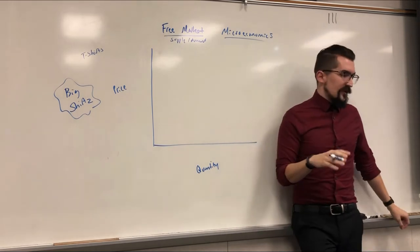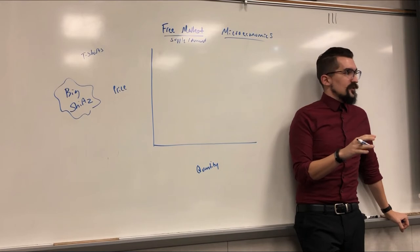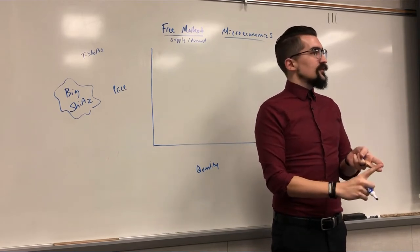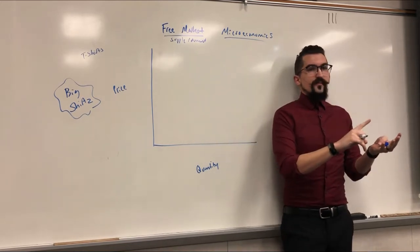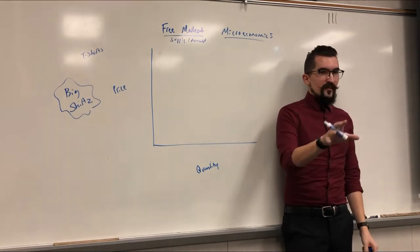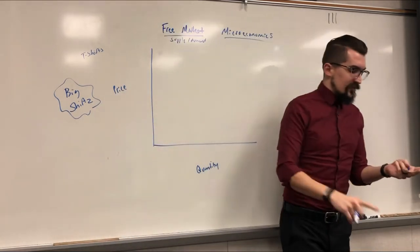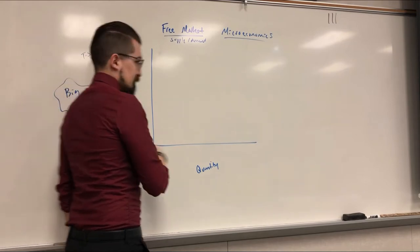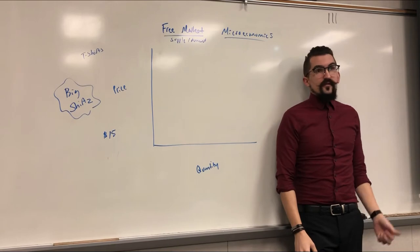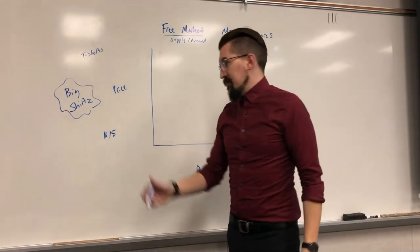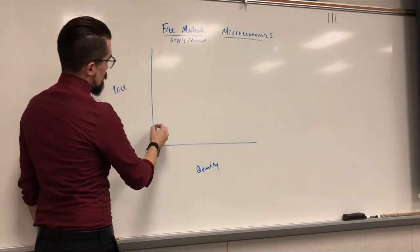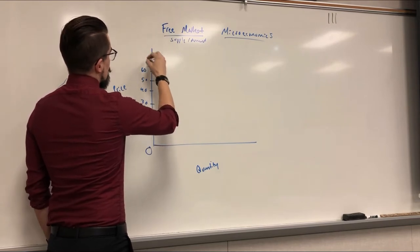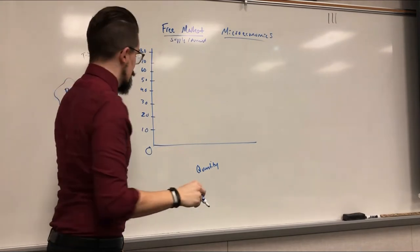It costs money to buy cotton or polyester, pay for machinery, bleaching, dyeing, distribution, and marketing. Let's say all those things together — materials, labor, transportation, and advertising — cost a minimum of $15 per shirt. So I can't successfully charge anything less than $15. I'd scale the y-axis: $10, $20, $30, $40, $50, up to $80, and that's my price in dollars on the y-axis.